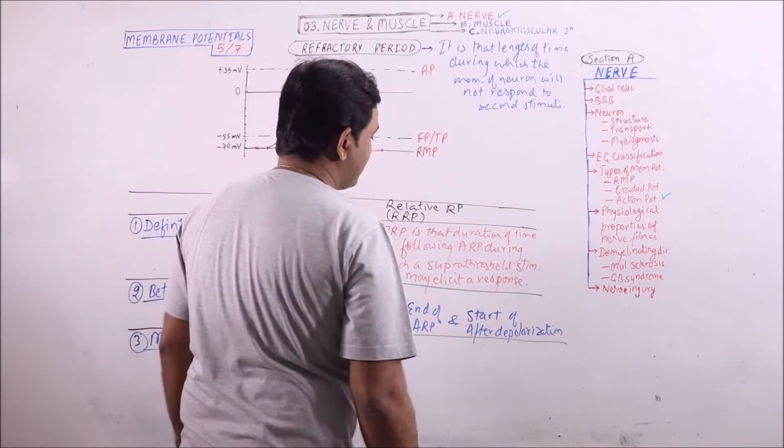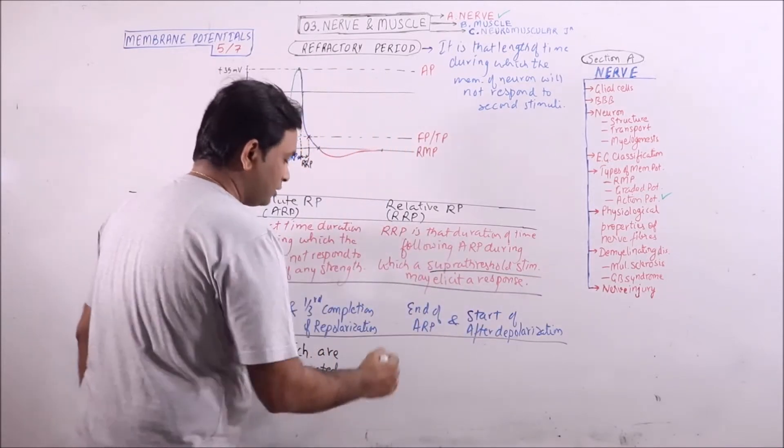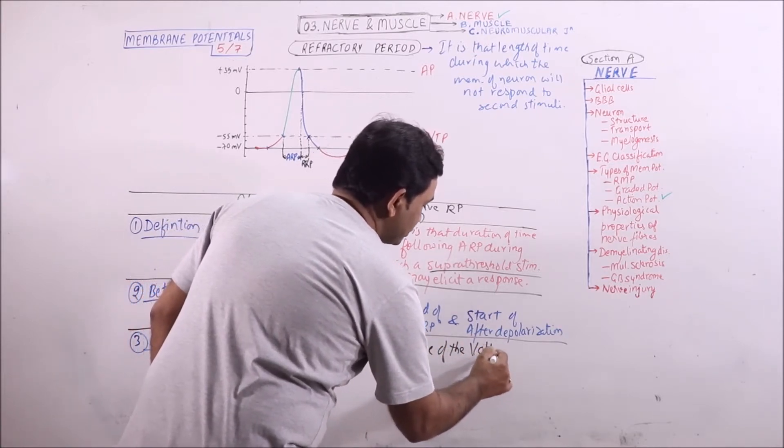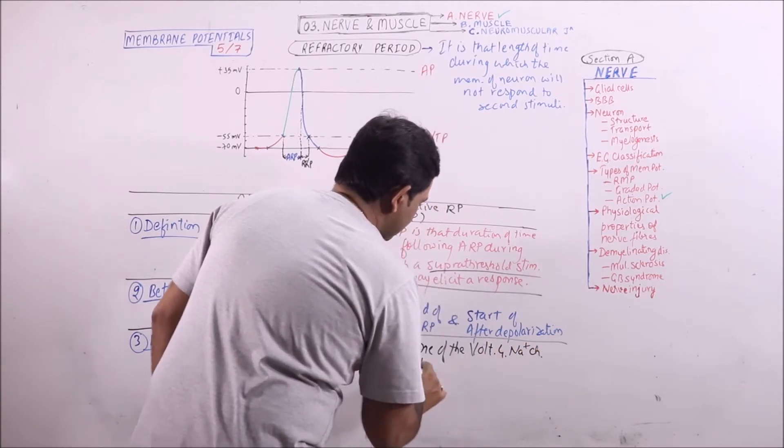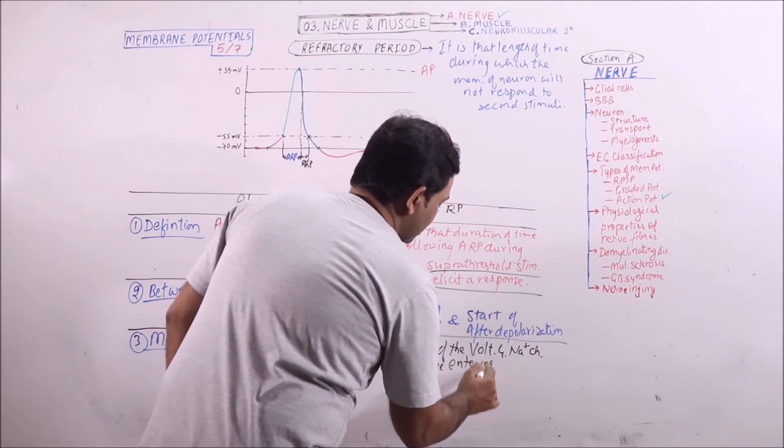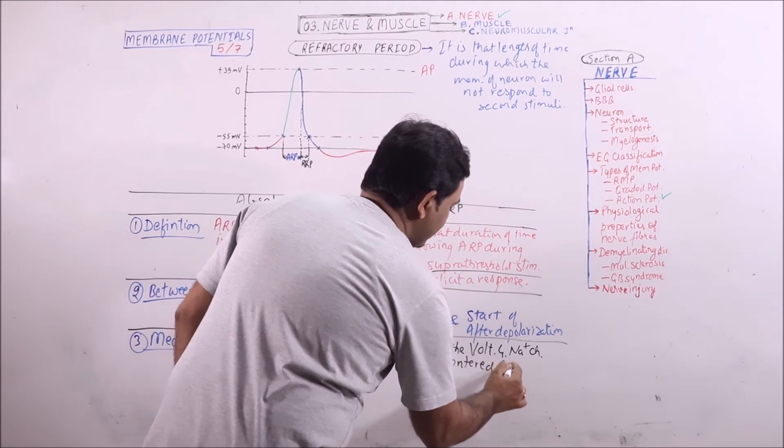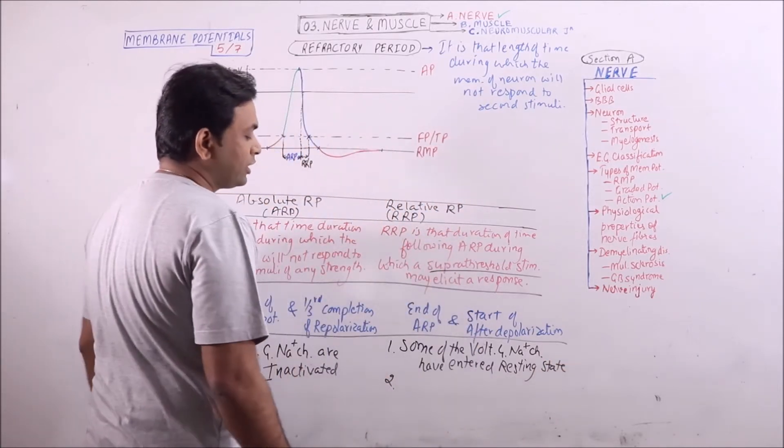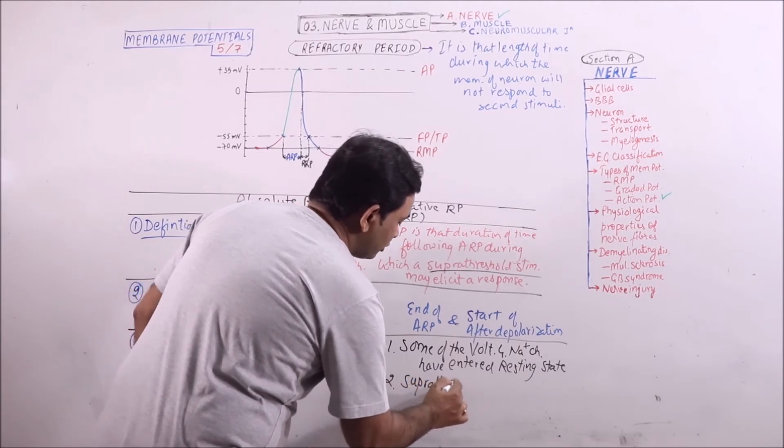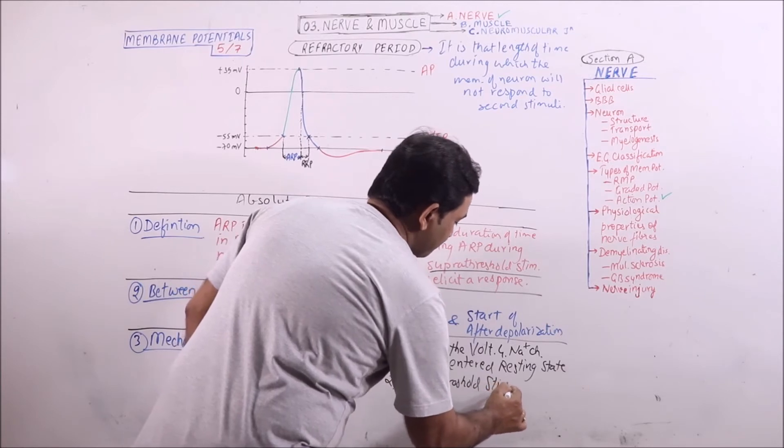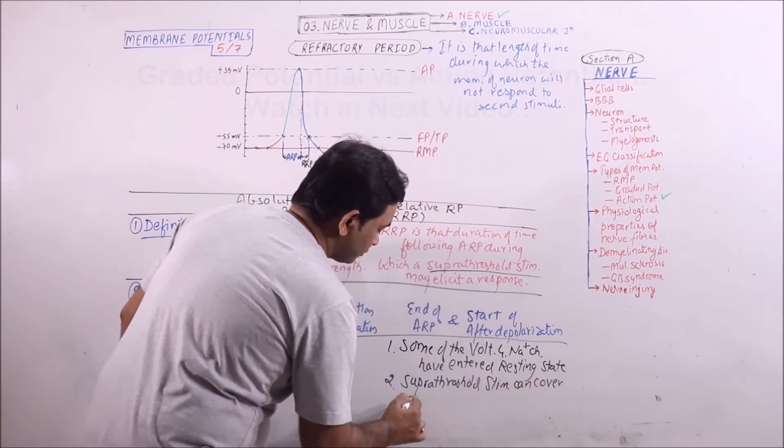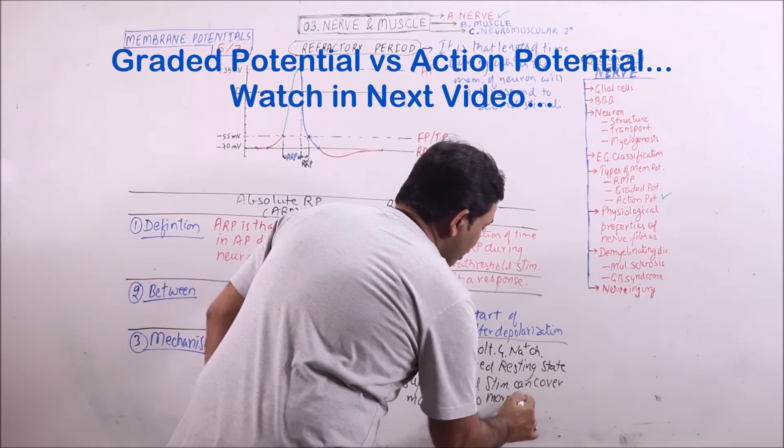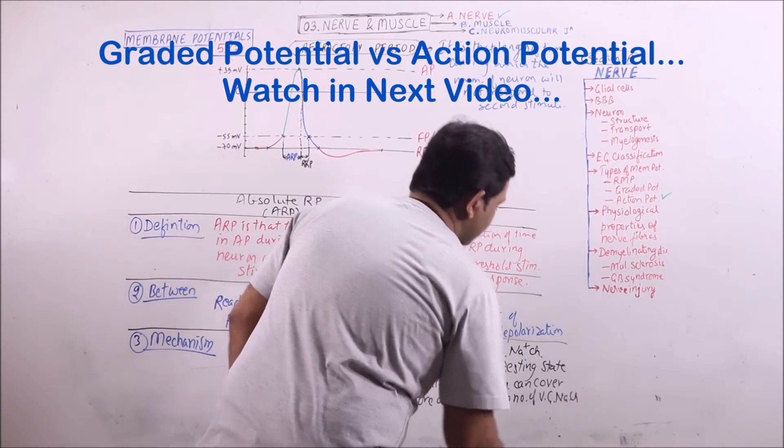The mechanism behind relative refractory period, why it is responding to supra-threshold stimuli, there are two reasons. Some of the voltage-gated sodium channels have entered the resting phase, so these can respond. Another point is that a supra-threshold stimulus can cover more area in comparison to the threshold stimulus, so more number of voltage-gated sodium channels can be involved.